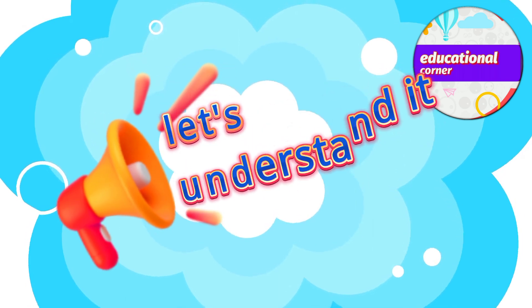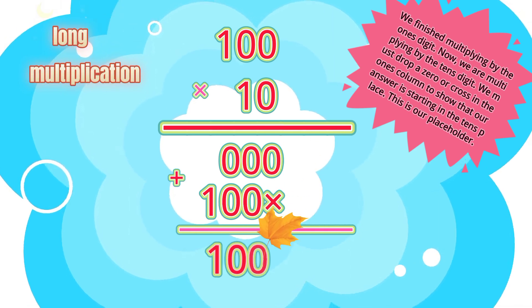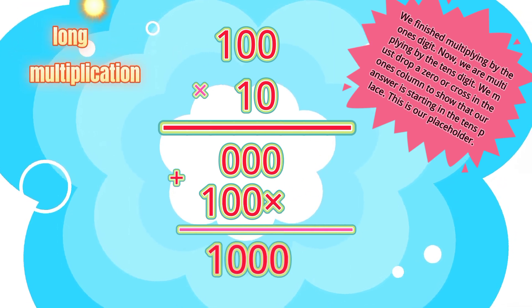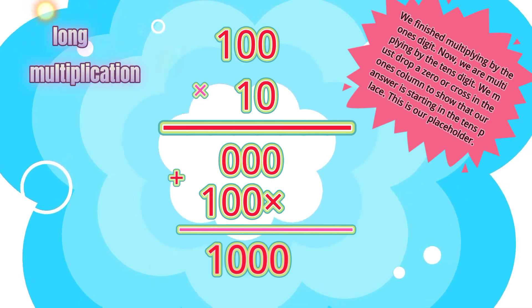Let's understand it. We finished multiplying by the one's digit. Now we are multiplying by the tens digit. We must drop a zero in the ones column to show that our answer is starting in the tens place. This is our place holder.